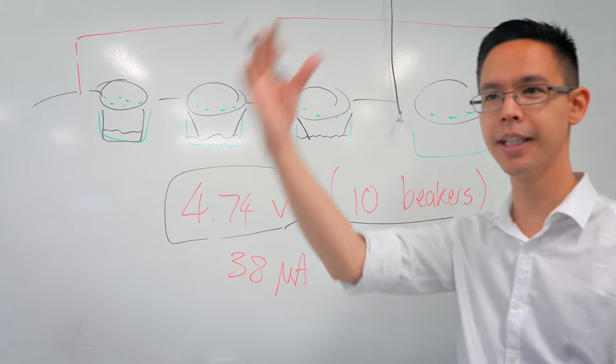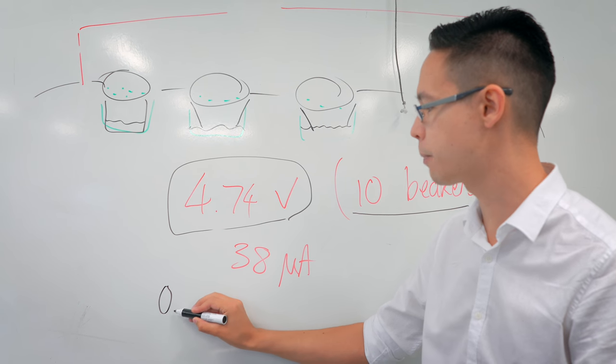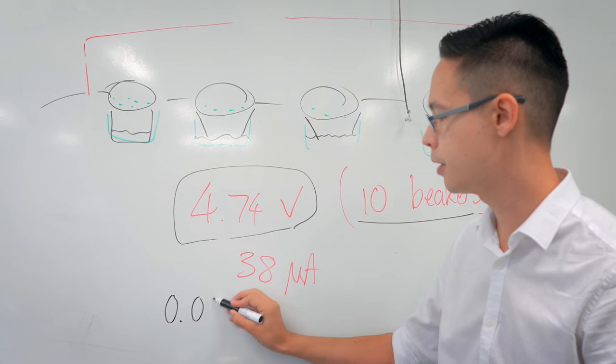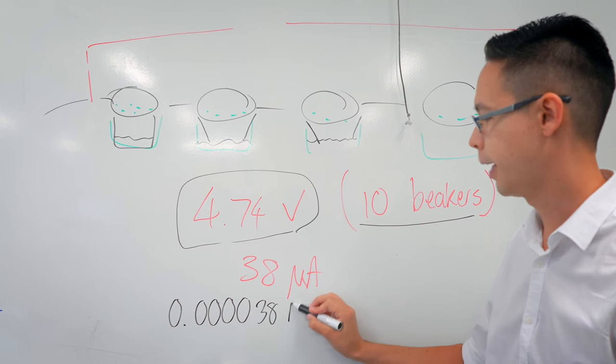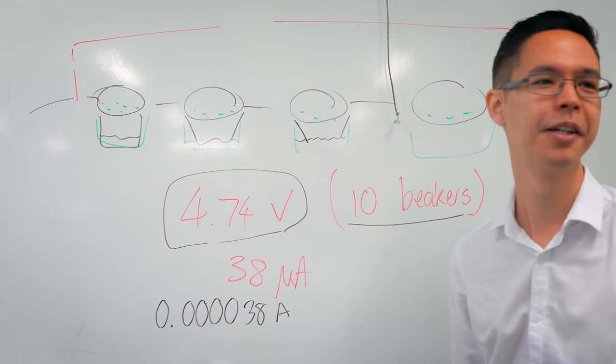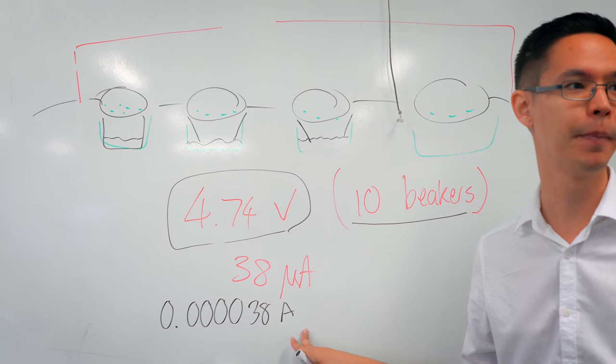How tiny is a microamp? If I convert that to amps, that'll be 0.000038 amps. So that's not very much.